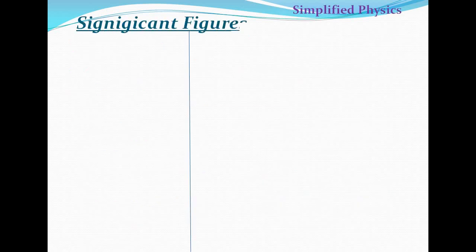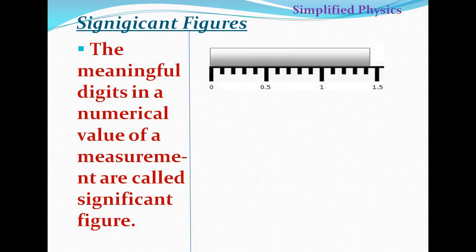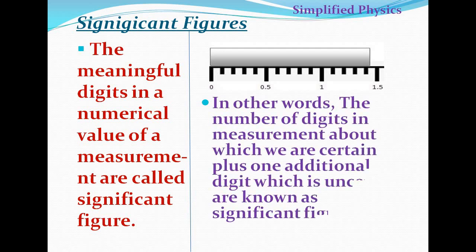What are significant figures? Simply, the meaningful digits in the numerical value of a measurement are called significant figures. An alternative definition: the number of digits in a measurement about which we are certain, plus one additional digit about which we are uncertain.